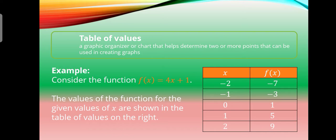We consider the values of x, which are negative 2, negative 1, 0, 1, and 2. In order to know the value of f(x), or the value of y, we need to substitute the value of x into the given function f(x) = 4x + 1. So, if the value of x is equal to negative 2, then the value of f(x) is equal to negative 7, because we substituted the value of x into the function.